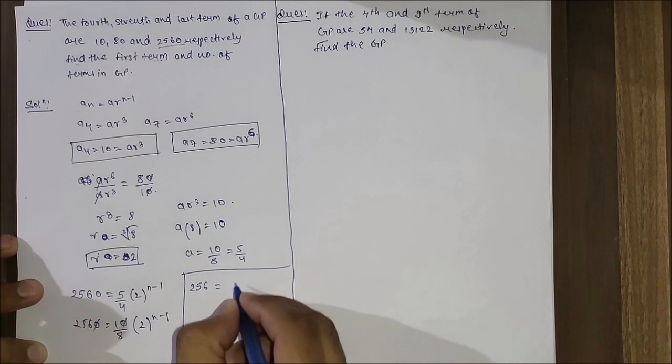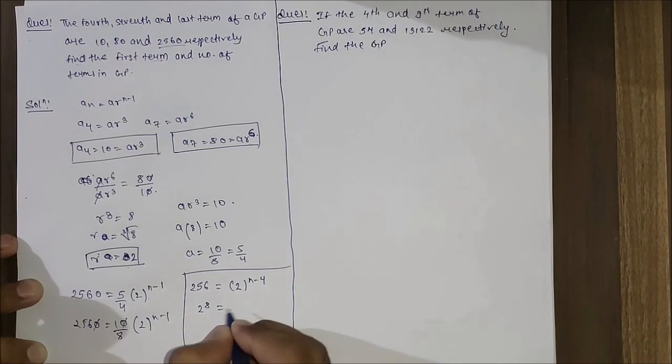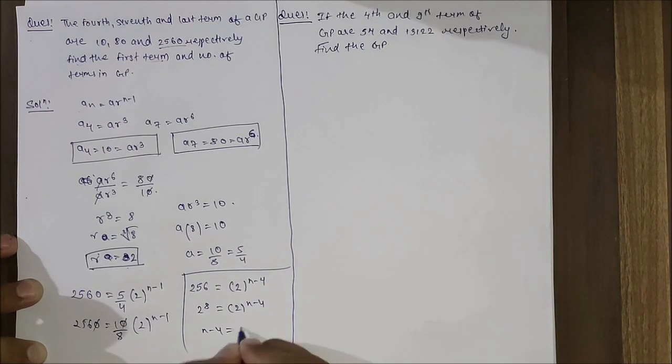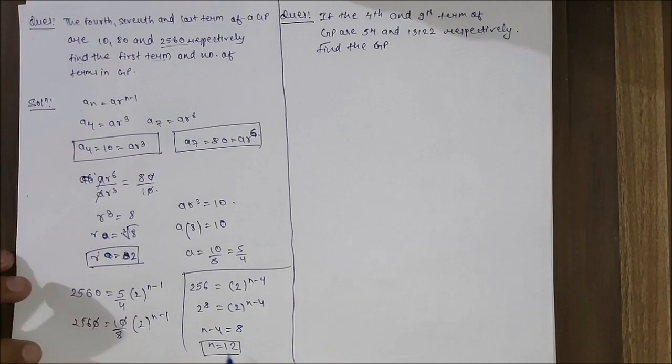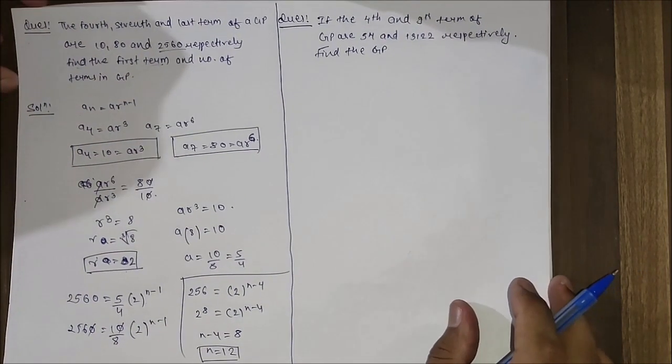Simplifying, 2560 equals 10 by 8 times 2^(n-1). After canceling, we get 256 equals 2^(n-3), which is 2⁸ equals 2^(n-3). So n minus 3 equals 8, therefore n equals 11. Wait, recalculating: 2⁸ equals 2^(n-4), so n minus 4 equals 8, giving n equals 12. So 2560 is the 12th term of this GP.